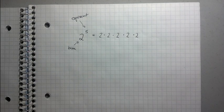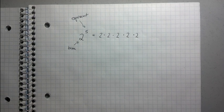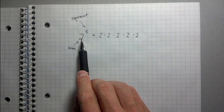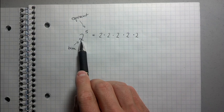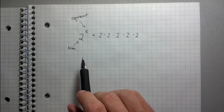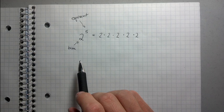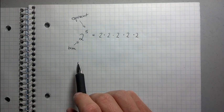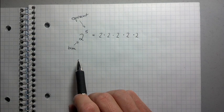There are five 2's multiplied together because the exponent is 5. So that's basically it — that's what exponents are. It's just a way of notating, a way of writing down, multiplying a number together a bunch of times — however many times are in the exponent. Now, I want to point out a very nice analogy between exponents and multiplication.